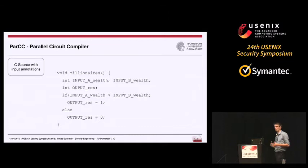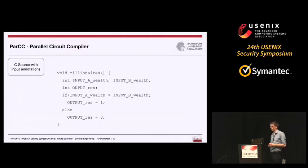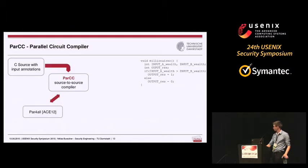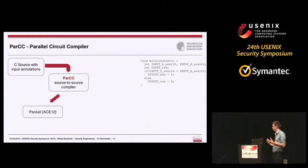This leads directly to our toolchain: a parallel circuit compiler that takes C source code as input and compiles it down to parallel circuits. Here is an example — a millionaire's problem written using the notation of our compiler CBMC-GC. It is essentially normal C code; the only change required is a special naming convention to identify parties and outputs. Our compiler feeds this code to a framework called par4all, which uses state-of-the-art parallelization techniques and returns C code annotated with where parallelism can be found and where the implementation is sequential.